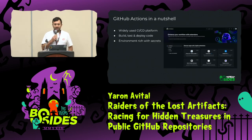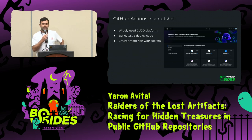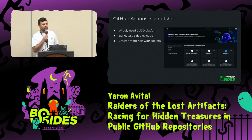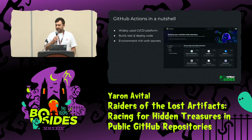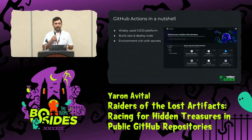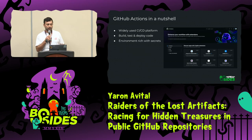GitHub Actions in a nutshell is a widely used CI/CD platform by GitHub — basically code execution as a service — that enables you to build, test, and deploy your code. Because it does a lot of integration with your cloud provider, Slack, or Jira, it needs secrets. So a lot of secrets are going on there.